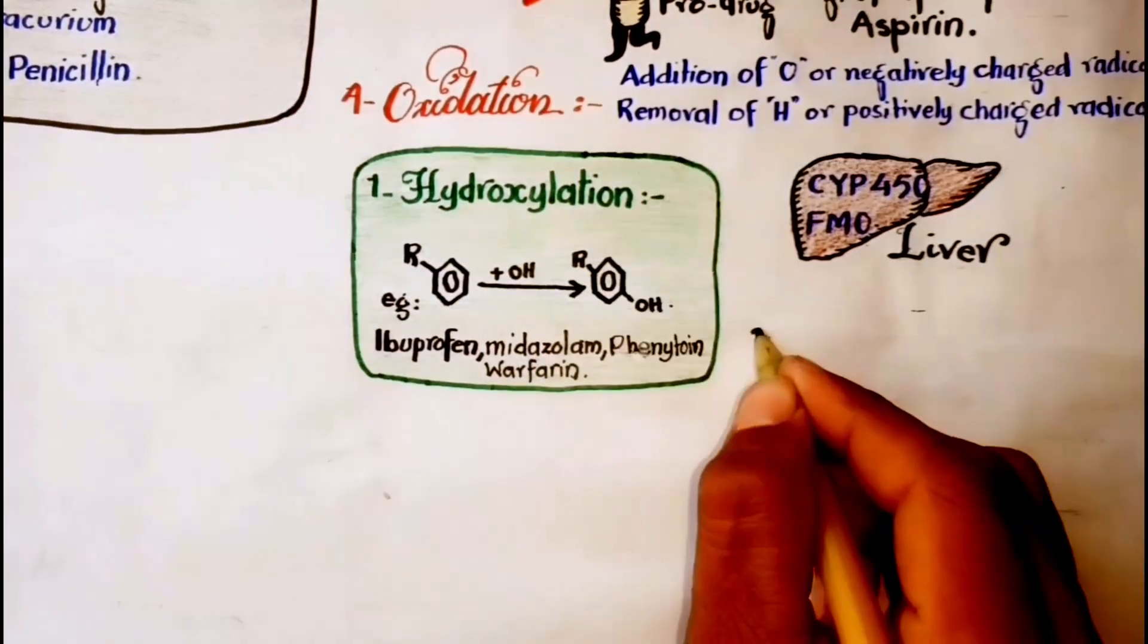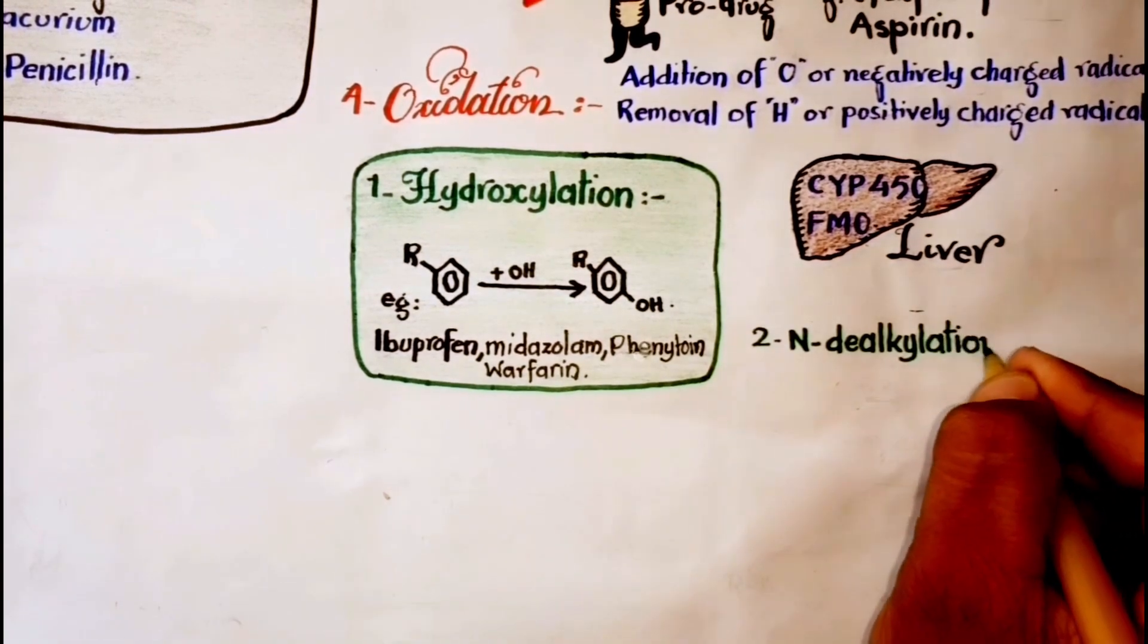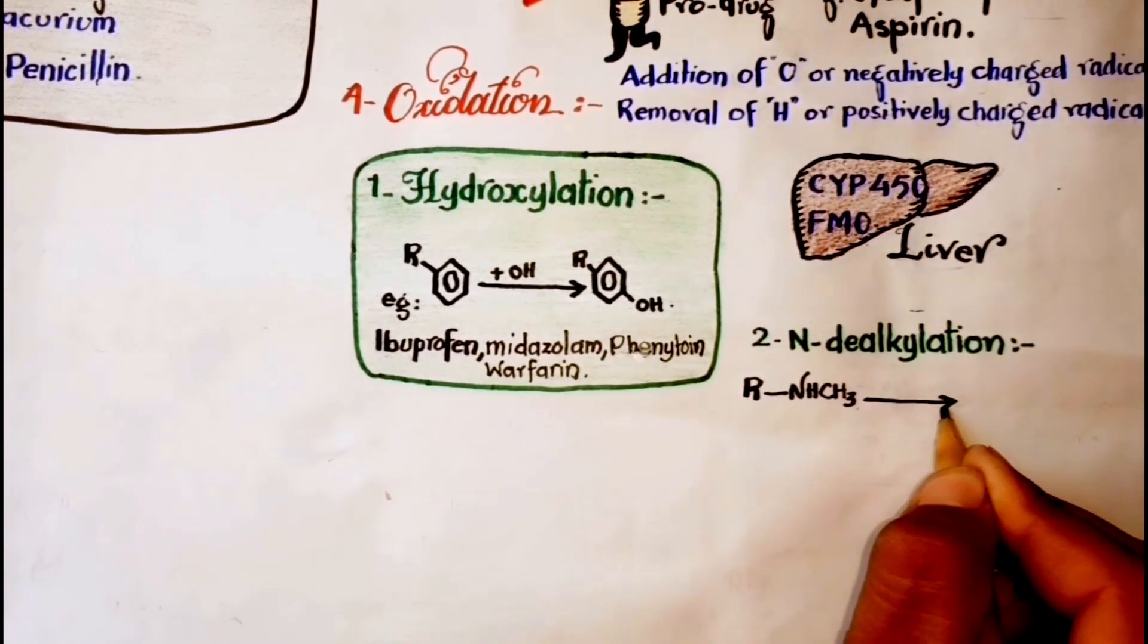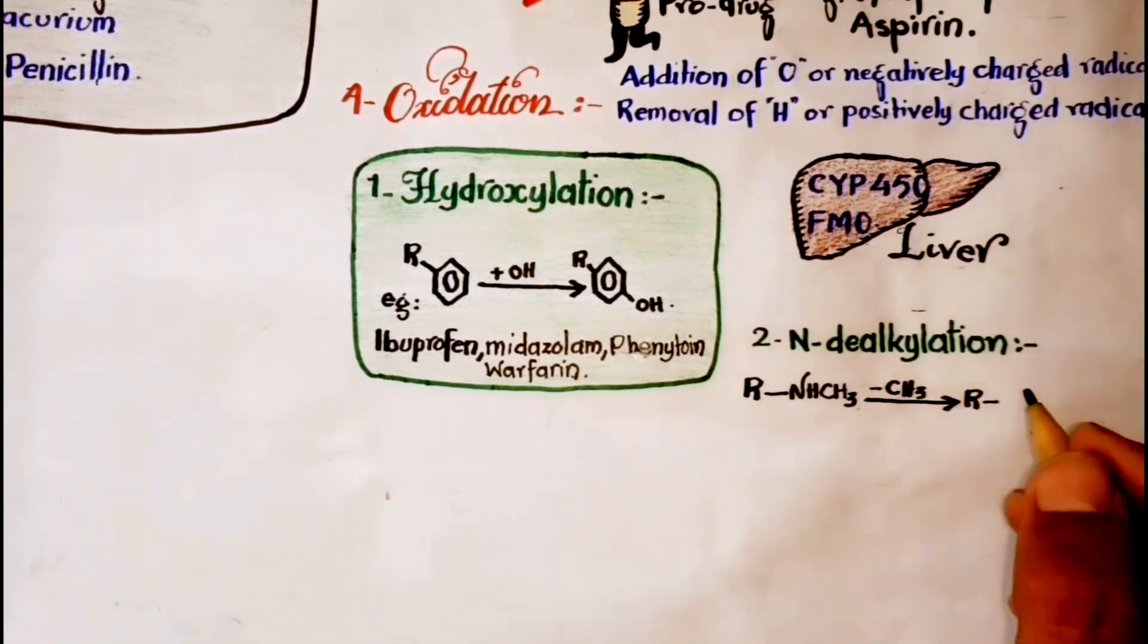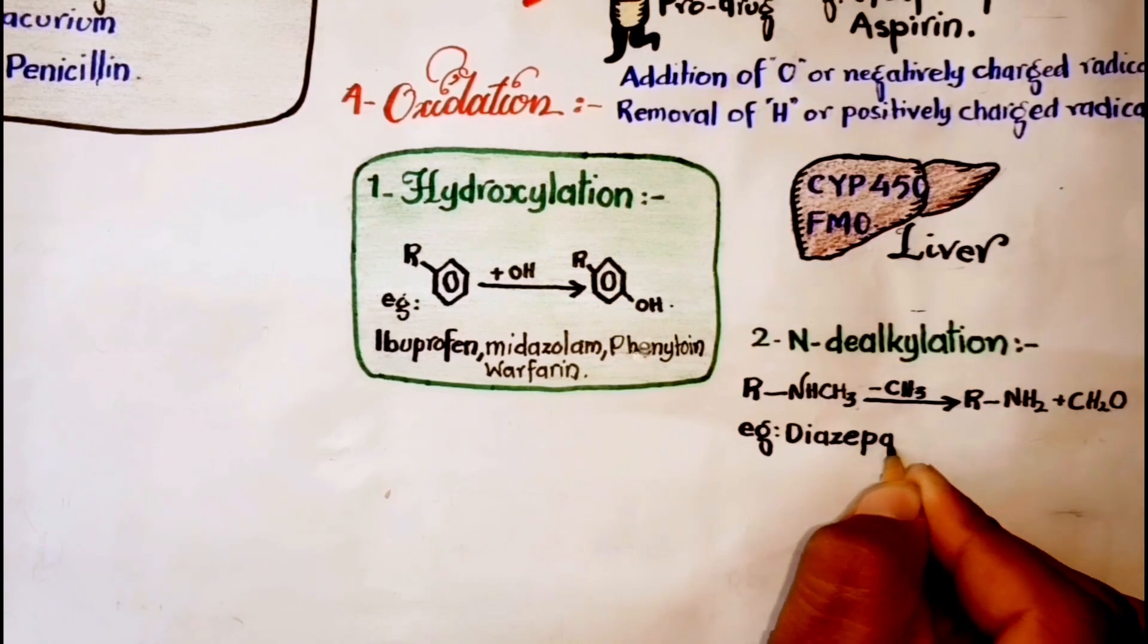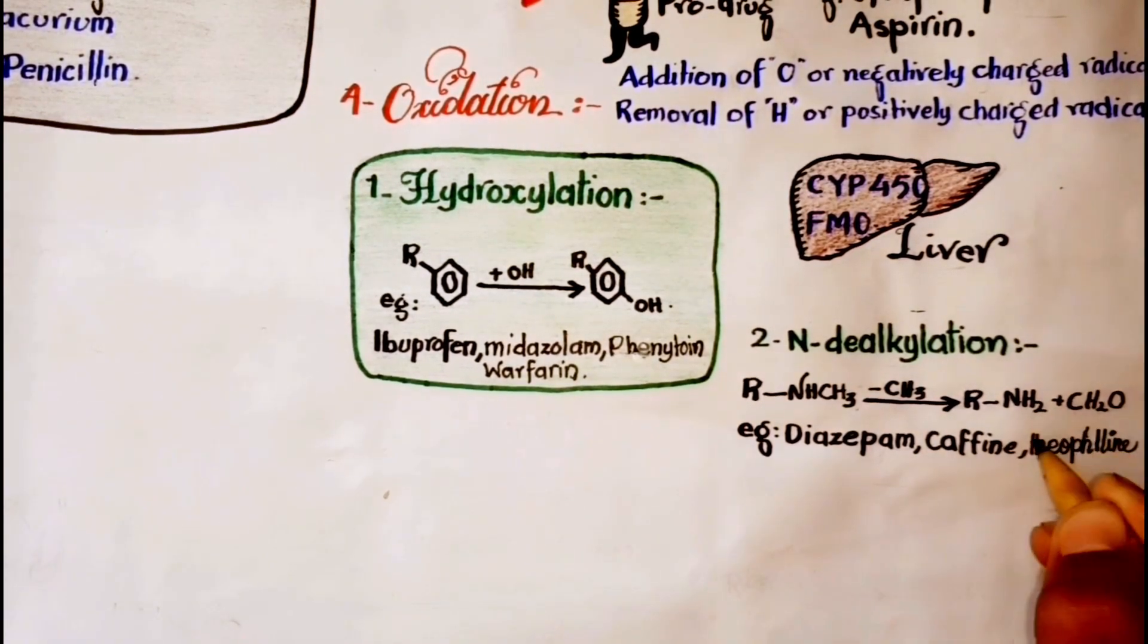The second type is N-dealkylation. N-dealkylation reactions involve the removal of an alkyl group attached to a nitrogen atom of the drug molecule. Hydrogen atom, caffeine, and theophylline follow this pathway.